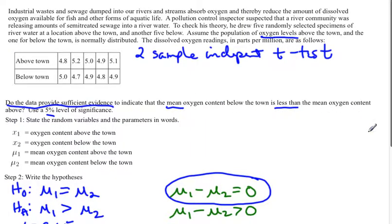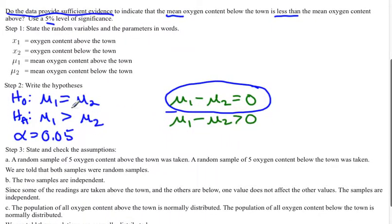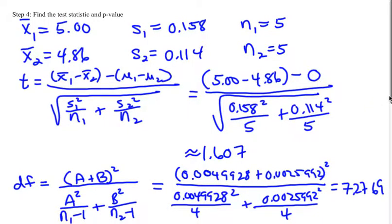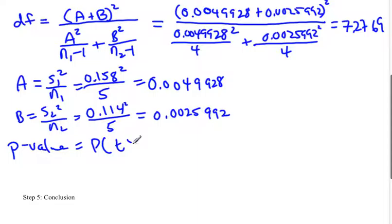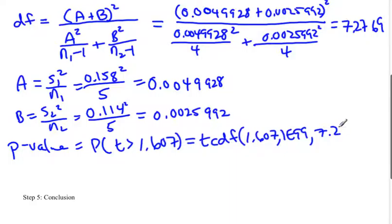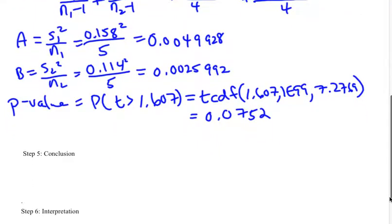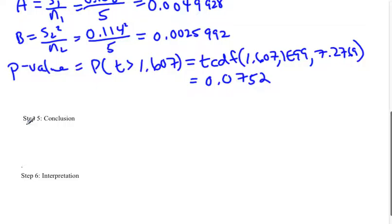Now to get your p-value. The p-value is the probability of getting a T. We need to decide if it's greater than or less than. Our Hₐ says it was greater than, so our p-value is also greater than. This would be greater than the number we calculated, 1.607. Use technology to find this. If you're using the TI-83, it would be tcdf, then 1.607, 1E99, and degrees of freedom 7.2769. It comes out to be 0.0752.